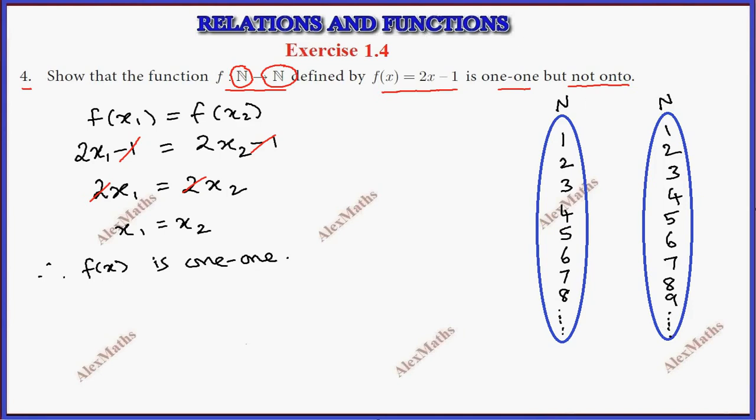Now, first value in the domain is 1. If I substitute, f(1) equals 2 times 1 minus 1, which is 2 minus 1, which is 1. Next, f(2) equals 2 times 2 minus 1. So 2 times 2 is 4, 4 minus 1 is 3. Then f(3) equals 2 times 3 minus 1.